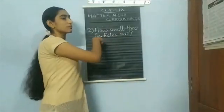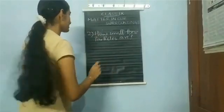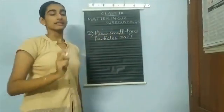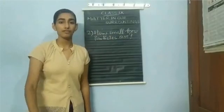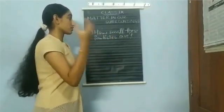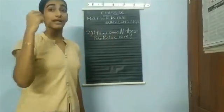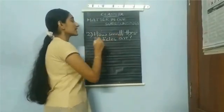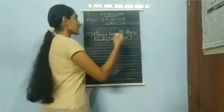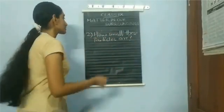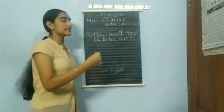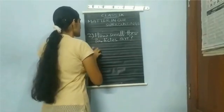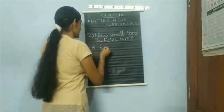The next point about the physical nature of matter is how small these particles are — the size of the particles of which matter is composed. We said matter consists of small particles, and now we need to check how tiny they are. For this, let's do another experiment: take two to three crystals of potassium permanganate.